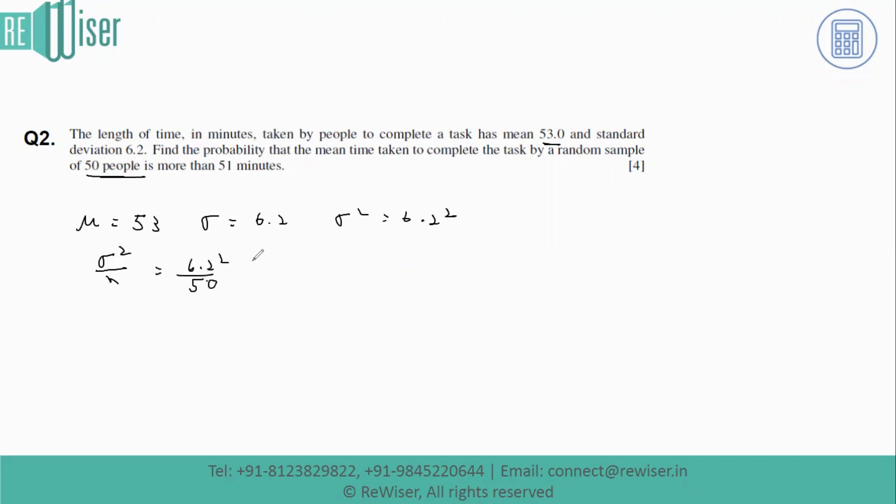This will be the new variance we'll use for calculating the probability. Since n is greater than 30 and the mean is 53, this will be treated as a normal distribution.